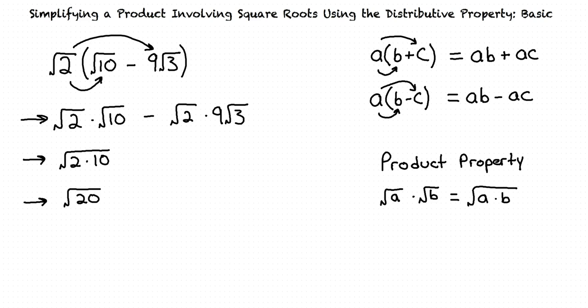We do the same for our last terms, which results in 9 times the square root of 3 times 2, which equals 9 times the square root of 6. So now we have the square root of 20 minus 9 times the square root of 6.